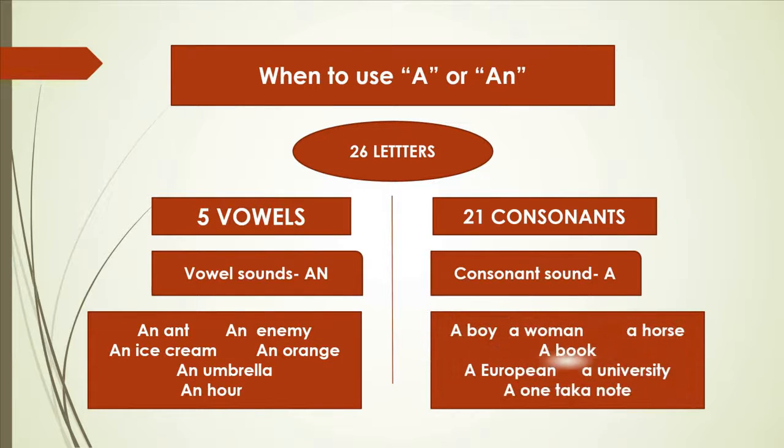Let's look at the example for a. A boy, a woman, a horse, a book. This example showing that the letter which is beginning at the beginning with the word is consonant letter. That's why we are using a before this nouns.